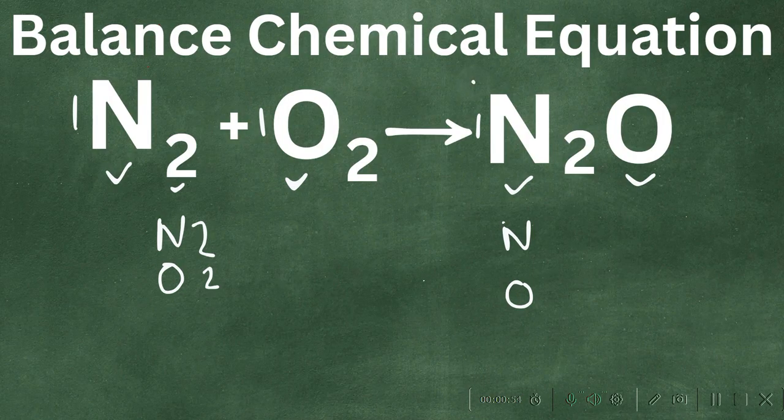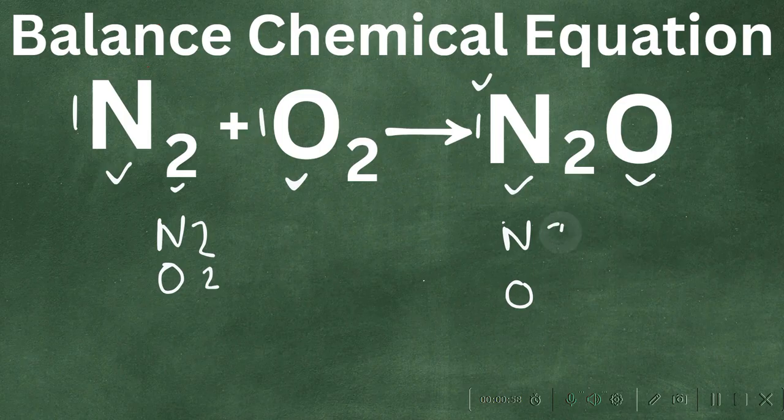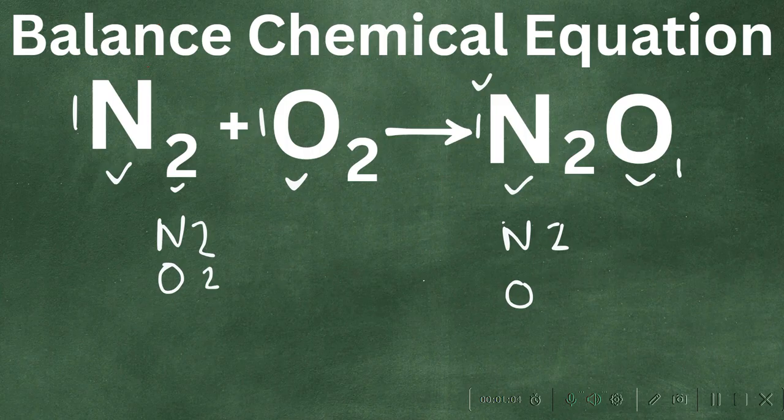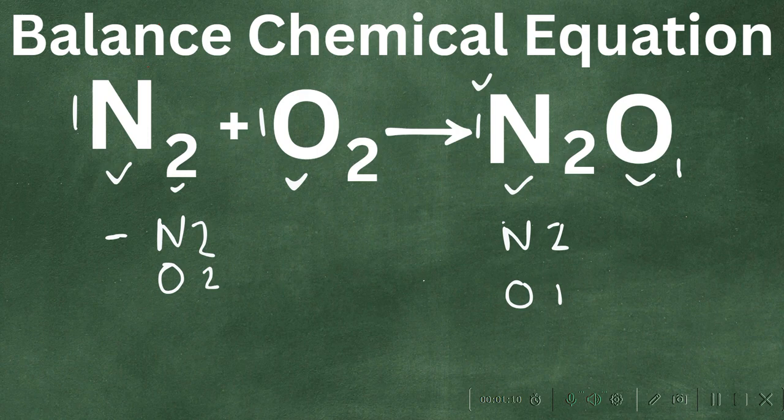Now on the other side, we have 1 times 2, that gives us 2 nitrogens, and 1 times 1, we can assume a 1 is there, gives us 1. So it looks like the nitrogens are balanced, but look at the oxygens.